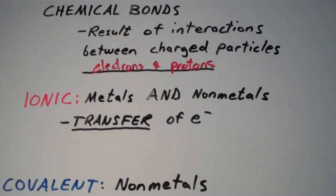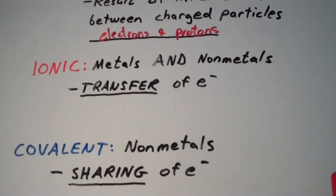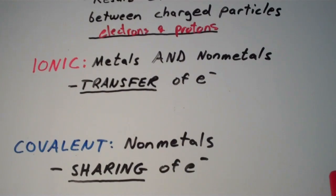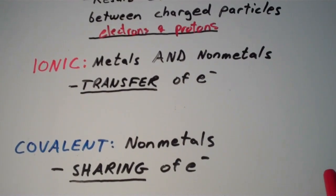And chemical bonds are broadly classified into two types, ionic bonds and covalent bonds. Ionic bonds occur between metals and nonmetals, while covalent bonds occur between nonmetals only.